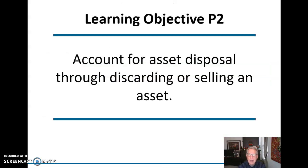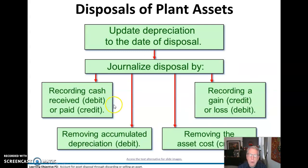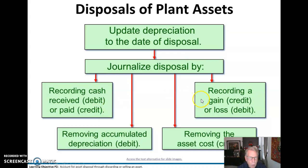For asset disposal — discarding or selling an asset — the first step is to update depreciation to the date of disposal. Don't forget to do that, especially on the exam. Then we record the cash we pay or receive, and record a gain or a loss. A gain is a credit; a loss is a debit. We must remove accumulated depreciation by debiting it, and remove the asset by crediting it.